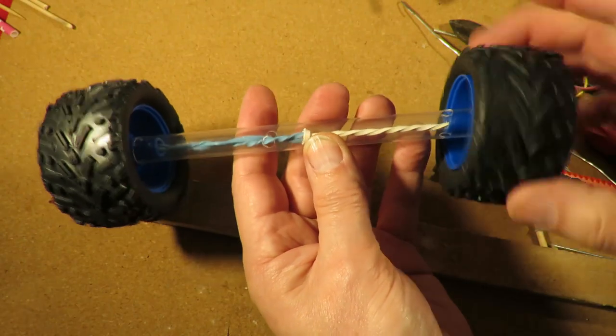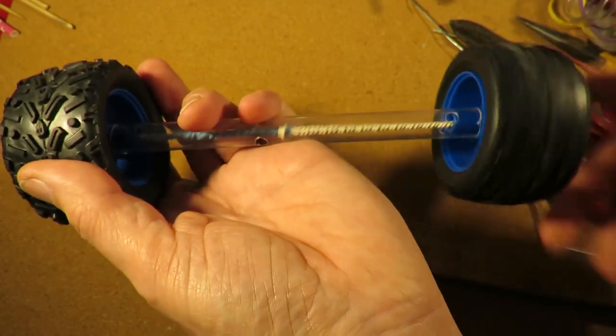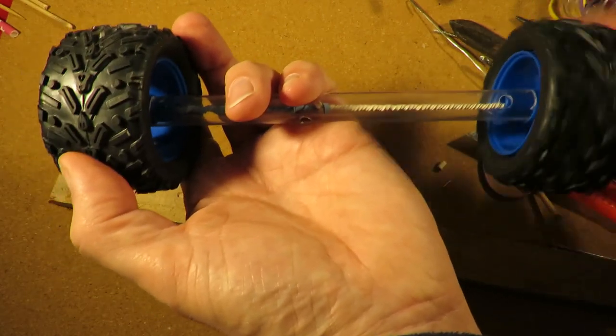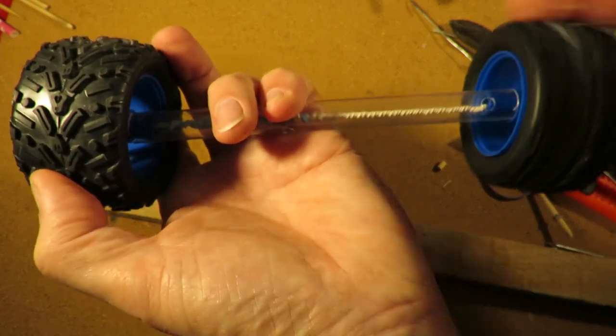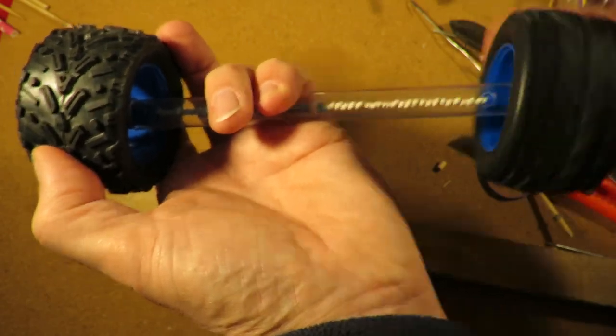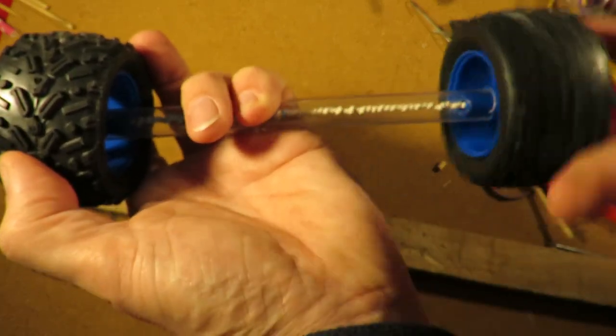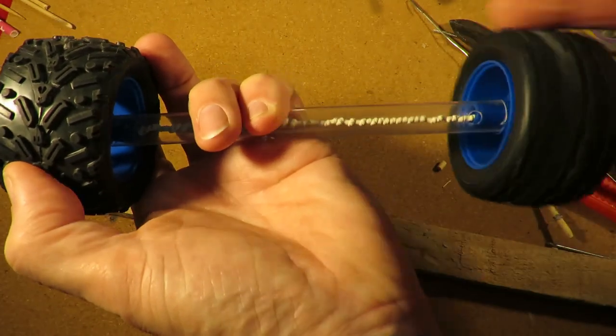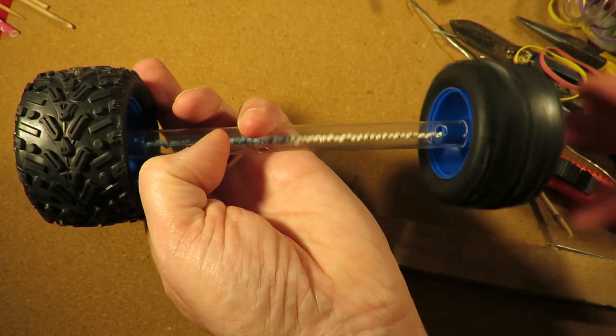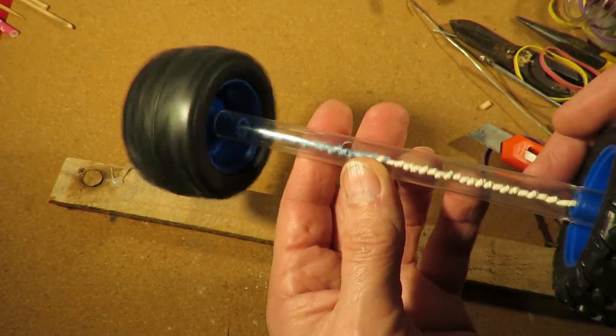So we should be able to wind it up. Hold one still, wind the other one up. You might need to add a bit of lubrication again to make sure they spin freely. I reckon that's going to work, but I might just put a little bit more lubrication on there to make sure it does spin. That one's going all right.